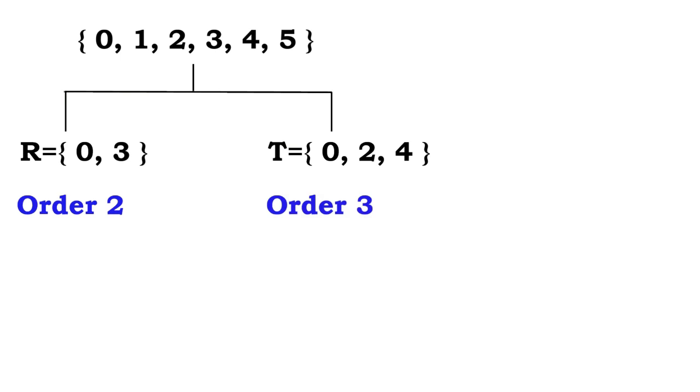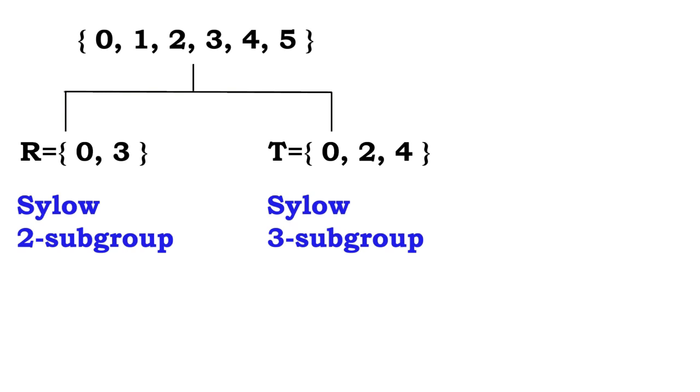For example, in the group Z6, the subgroups R and T have orders 2 and 3 respectively. Therefore, R and T are Sylow-2 subgroup and Sylow-3 subgroup respectively.